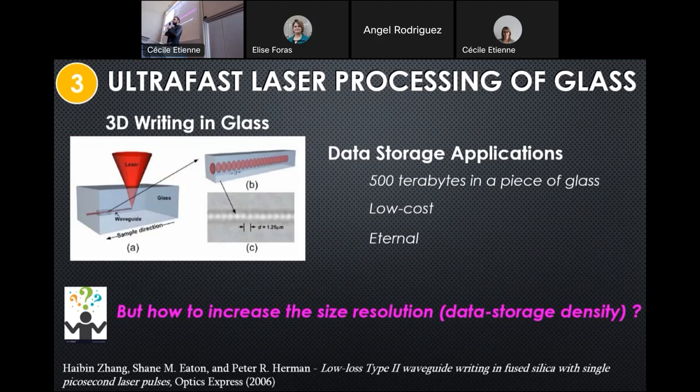Depending on the material, we need to choose precisely what kind of laser we are going to use, like the pulse duration, repetition rate, energy, scanning speed, etc. We create this kind of little focal volumes in the glass.